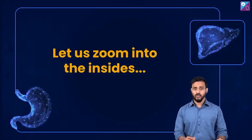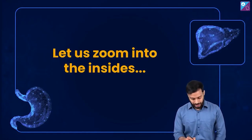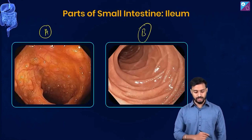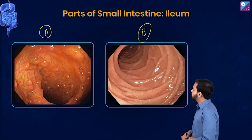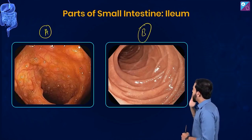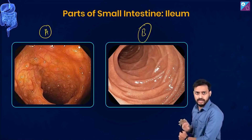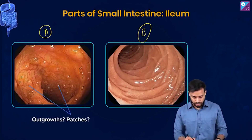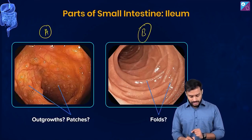Now we will zoom into the small intestine and look into it. Let's see if there are some differences. Yes, there are some differences. Let me label it so that you can interact with these images. Image A and image B — what do you see? In image A it's kind of patchy, and I see some bumps. In image B I see folds. Yes, outgrowths or patches in A, and folds in B.